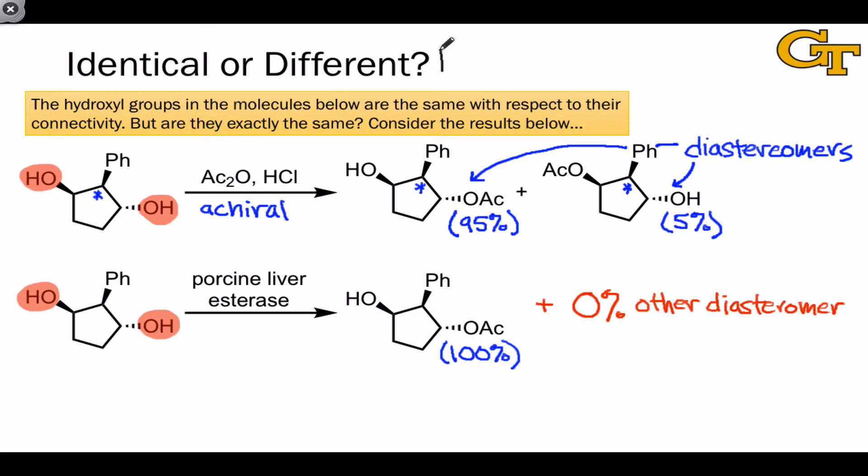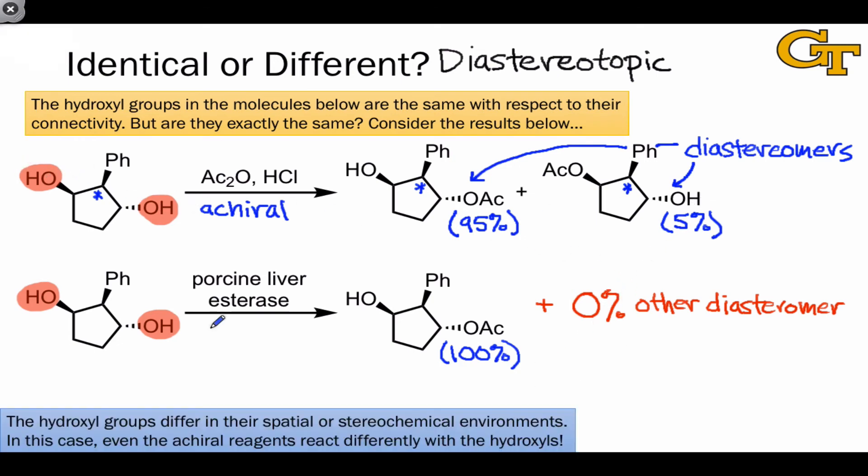The relationship in this case is referred to as diastereotopic, as suggested by the fact that reaction of one or the other of the hydroxyl groups leads to diastereomers. And the difference here is that even under the achiral conditions, the diastereotopic groups are reacting differently. This is in contrast to the enantiotopic relationship, where we see equivalent reactivity of 50-50 mixture of enantiotopic hydroxyls.